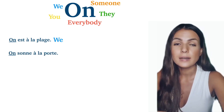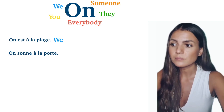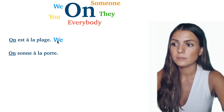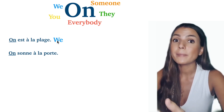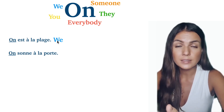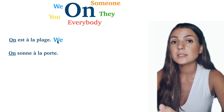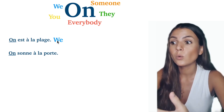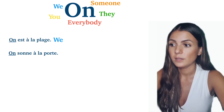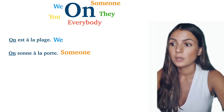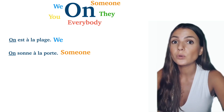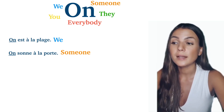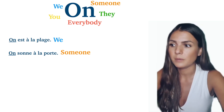Next one: 'on sonne à la porte'. 'Sonner' is to ring the bell, 'porte' is door. Imagine you are at your place with a friend and he says 'on sonne à la porte'. Who is 'on' here? Someone — we don't know, your friend doesn't know. So basically it means 'quelqu'un sonne à la porte' — somebody is ringing the doorbell.